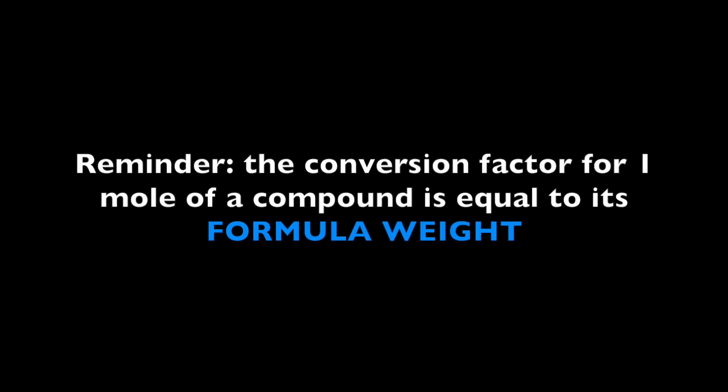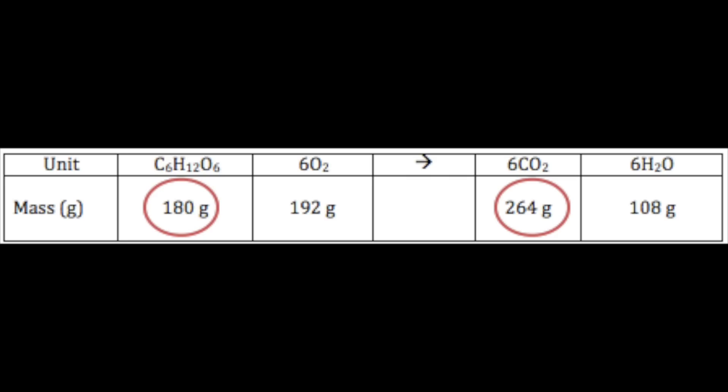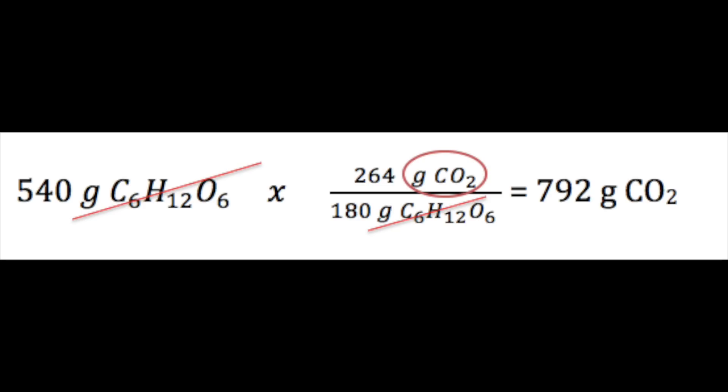The conversion factor for one mole of a compound is equal to its formula weight. The relationship between glucose and carbon dioxide is as follows: 180 grams of glucose consumed as a reactant produces 264 grams of carbon dioxide as a product. This can be used as a conversion factor in solving problems. Using that conversion factor, we're able to calculate that 540 grams of glucose yields 792 grams of carbon dioxide.